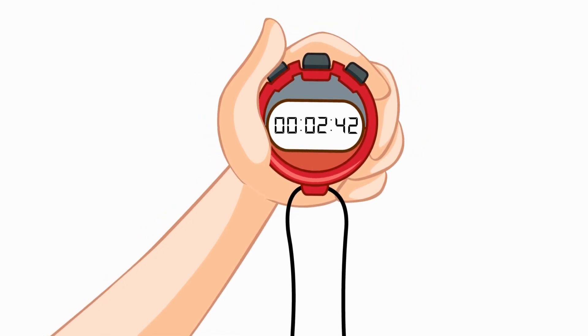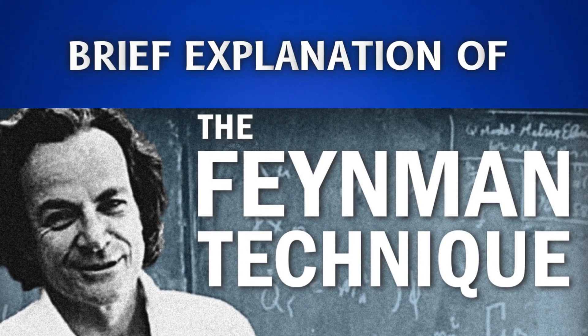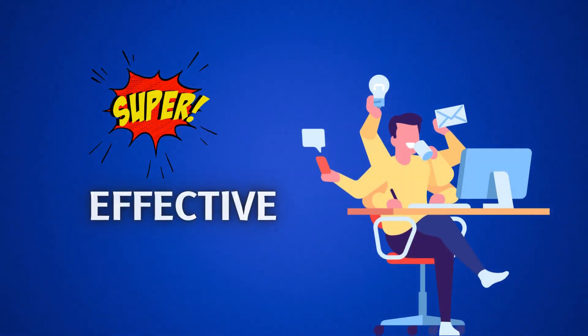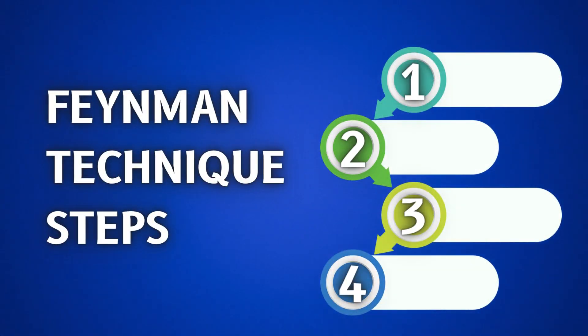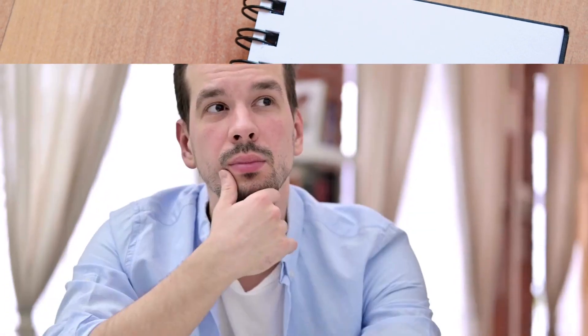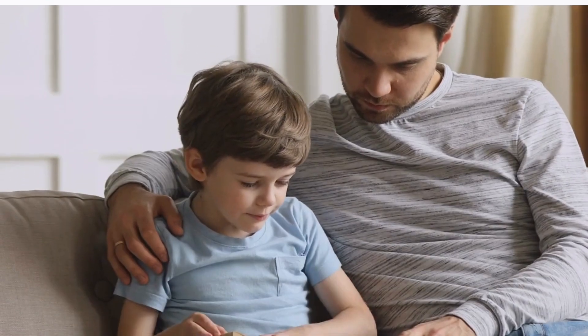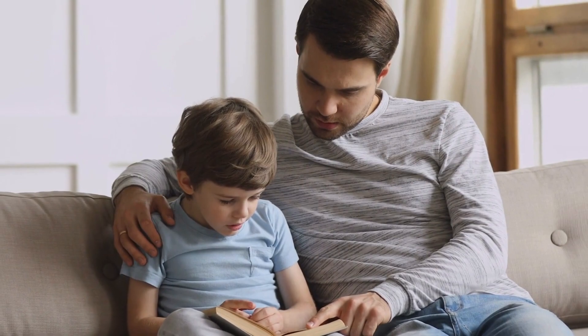Before moving on to the detail, let me briefly explain the Feynman Technique. It is an extremely simple and highly effective technique that works in four steps. But the core principle is that if you want to understand and retain a complex concept, make it so simple and teach it in a way that even a child can understand it.